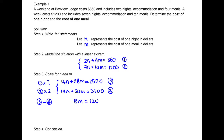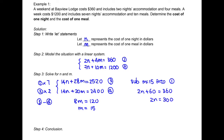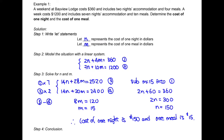We get 8M equals 120; dividing by 8 on both sides gives M equals 15. Substituting M equals 15 back into equation 1, we get 2N plus 60 equals 360, so 2N equals 300, and dividing by 2 gives N equals 150. Therefore, the cost of one night is $150 and the cost of one meal is $15.